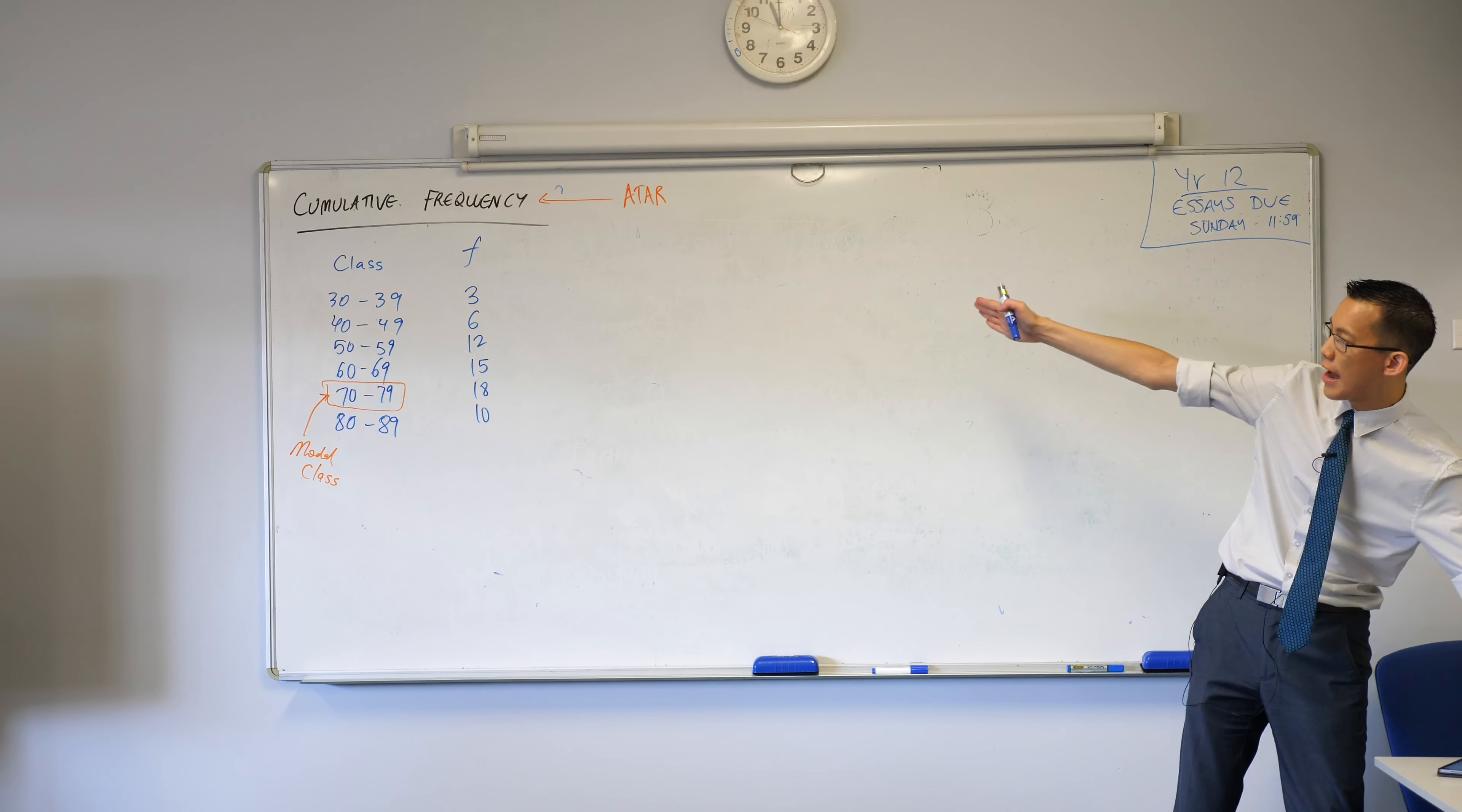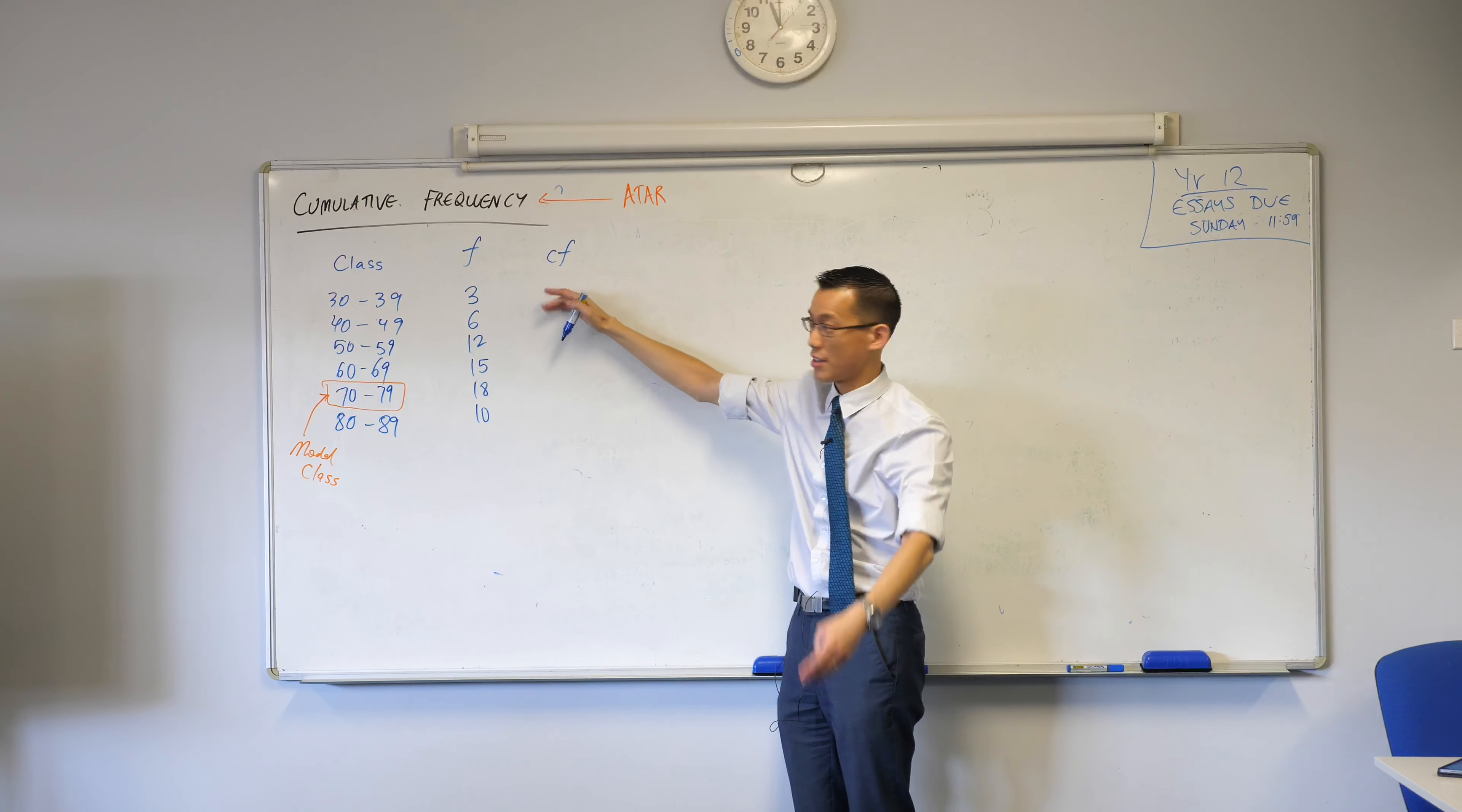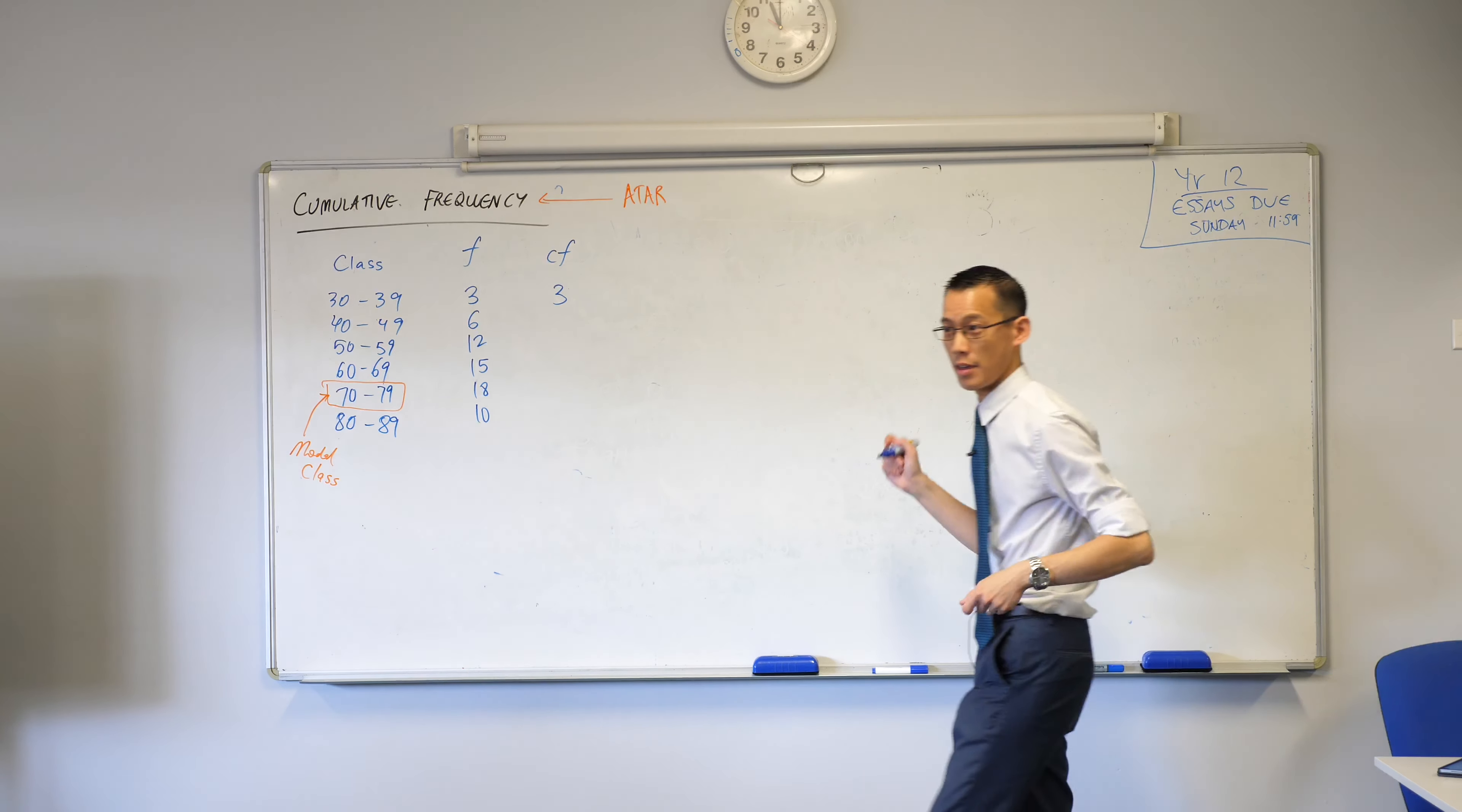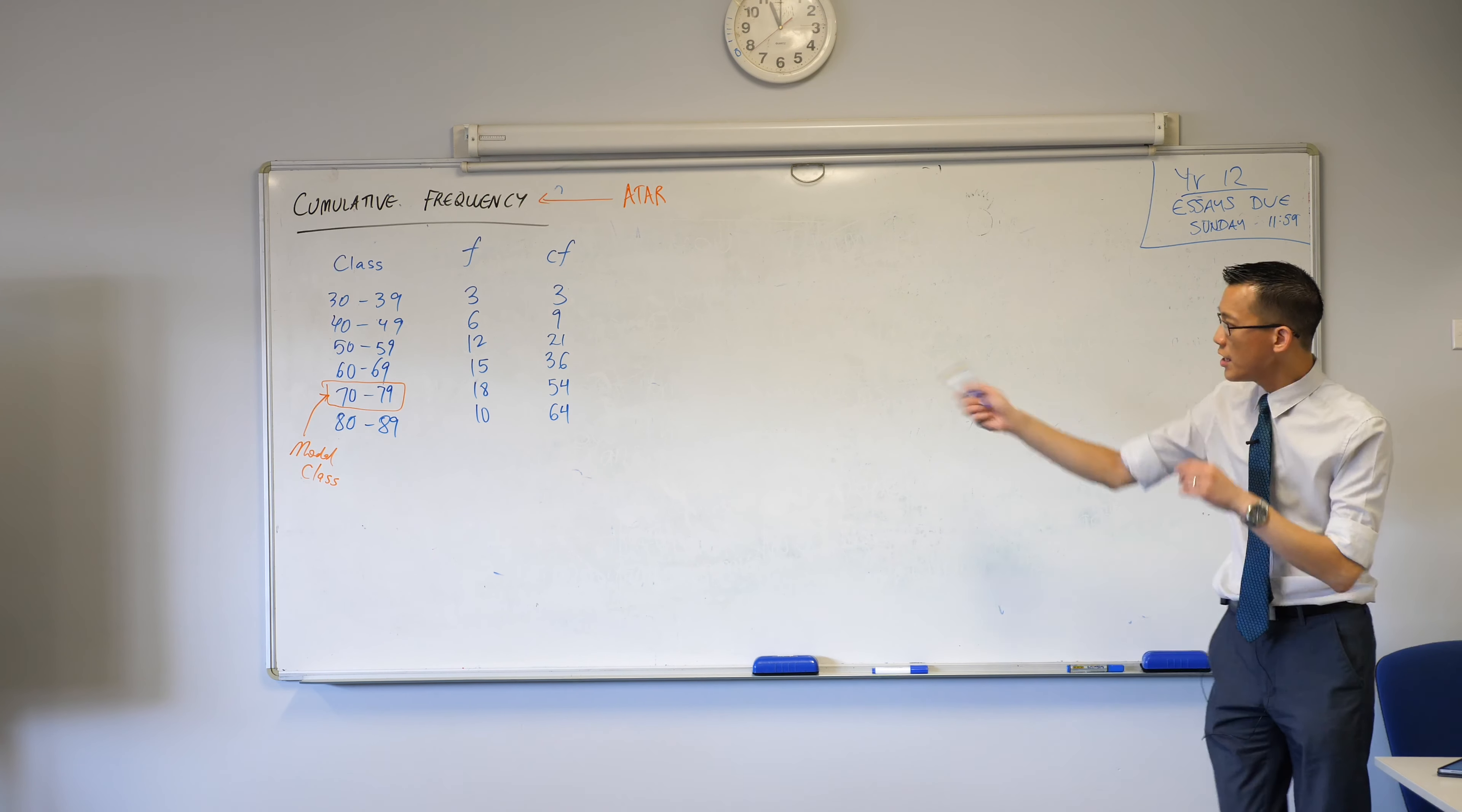This final column that we're really interested in is cumulative frequency. What this includes is the frequency of that class or that score including all of the previous ones. It's pretty easy to start at the top. There are no previous classes for this first one so it's just three. When you go to the next class down, 40 to 49, you include the six that are in 40 to 49 and all the previous ones, so the cumulative frequency will be nine. Then you take that number and it accumulates, so it's going to be 21, then 36, 54, 64.